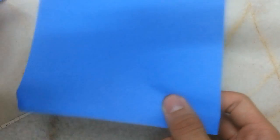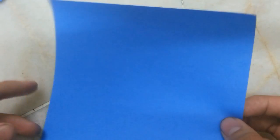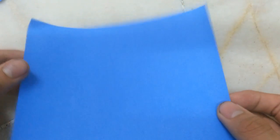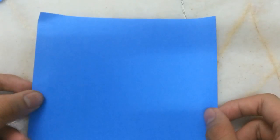First you will need a square sheet of paper with blue color on one side and white on one side. And this is kami paper, it's 6 inch.